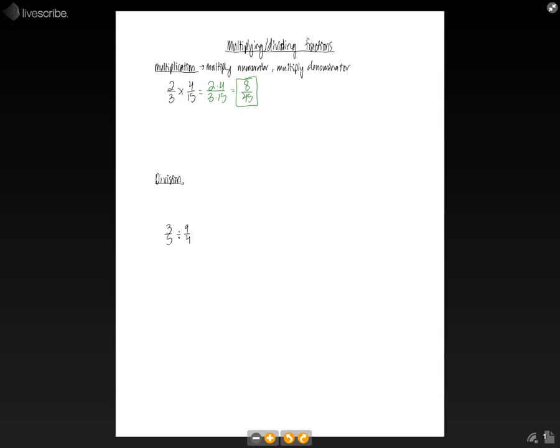And that will be our final answer because this is fully reduced and simplified. But you will want to note that you will reduce the fractions when it's possible, but in this case it was already reduced. So that's multiplication: just multiply the numerators and multiply the denominators.